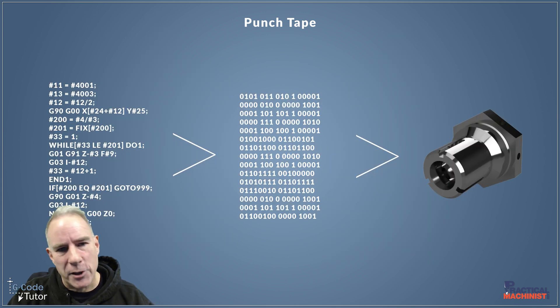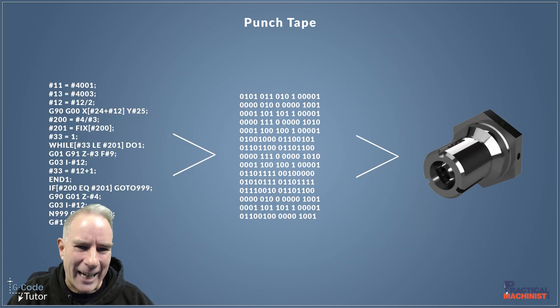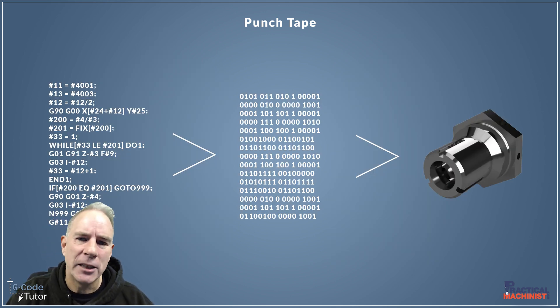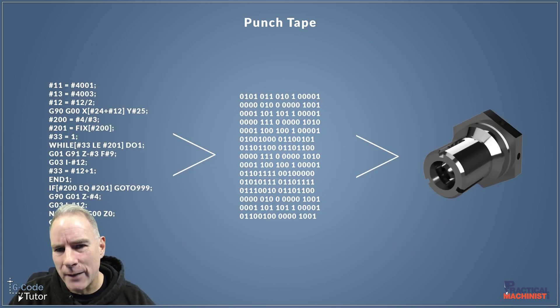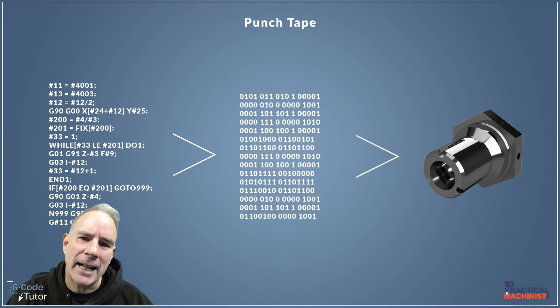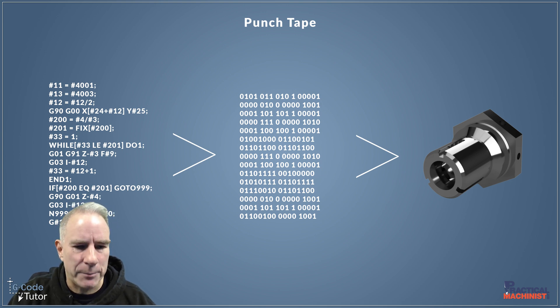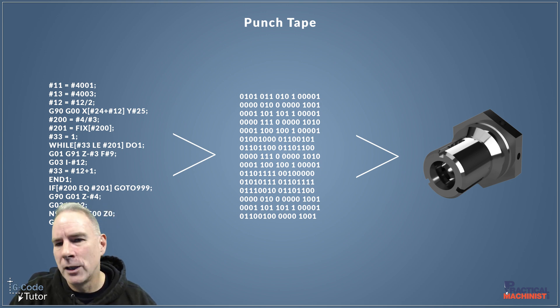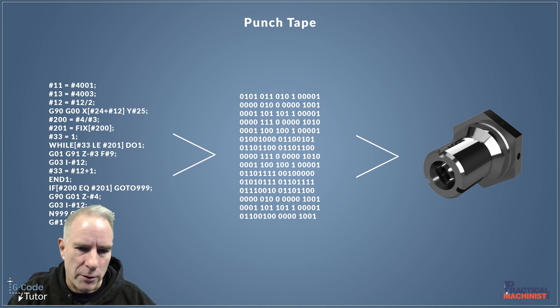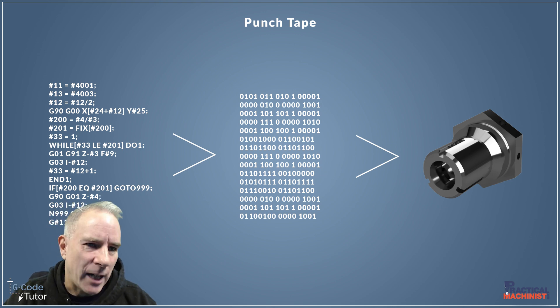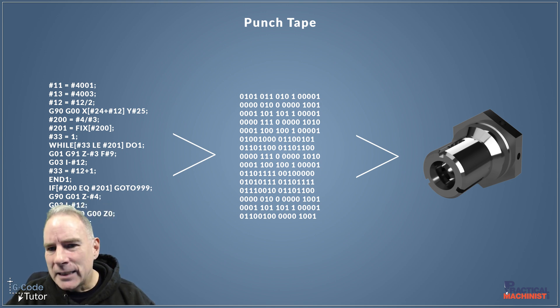The way these punch tapes work is they take our high-level language — our G-Code — turn it into a low-level language, machine code, and then that is understood by the machine and the chips on your CNC controls. So that's how G-Code started.